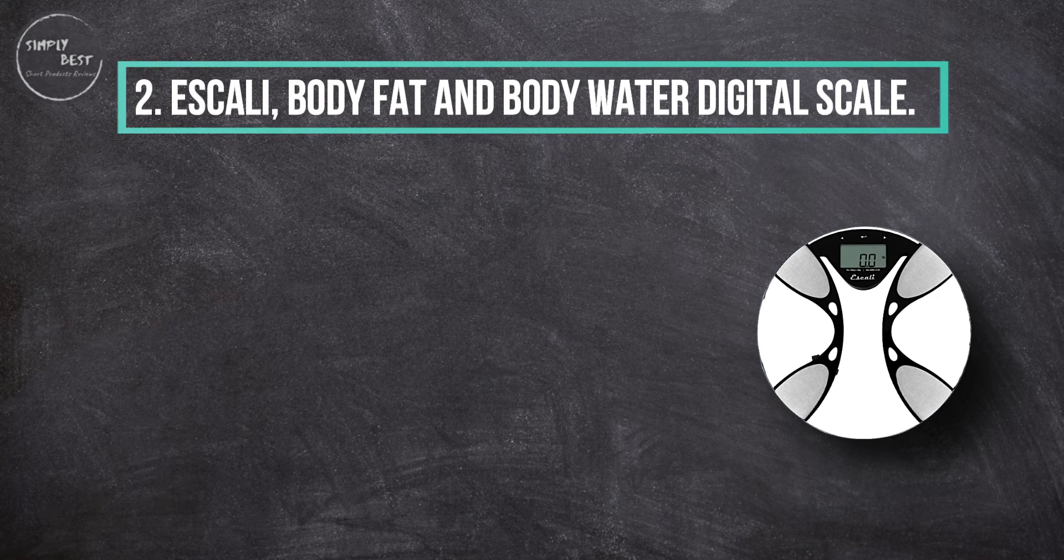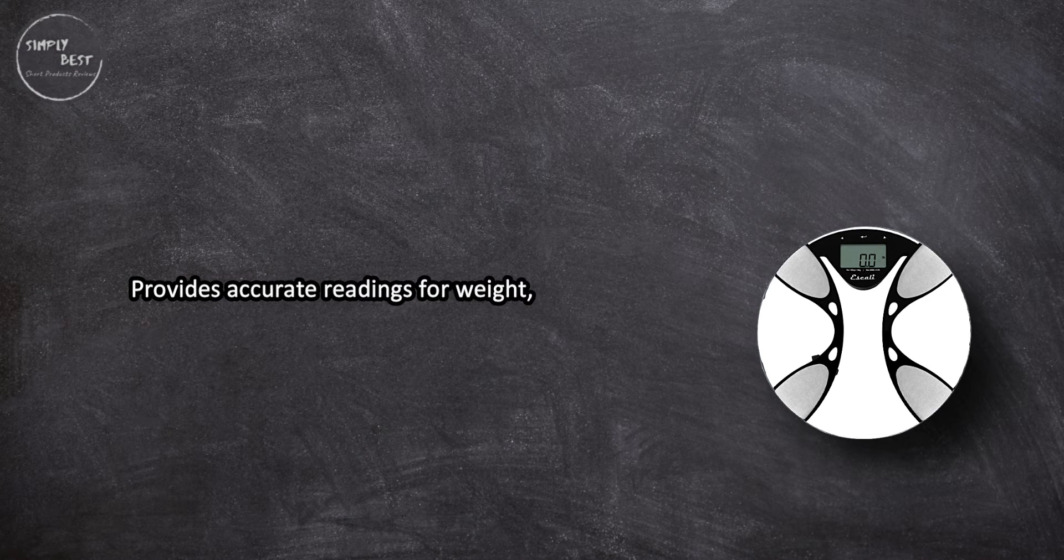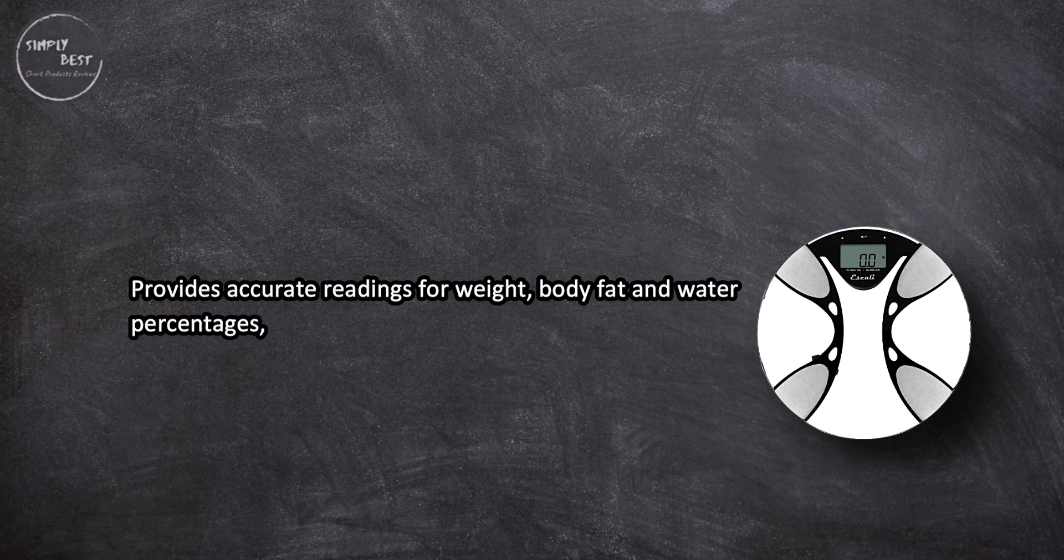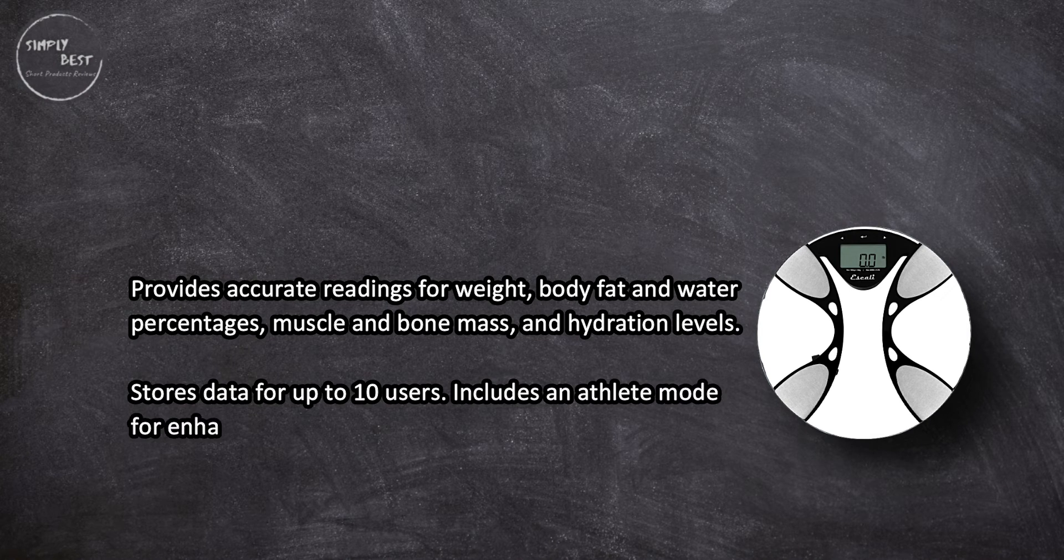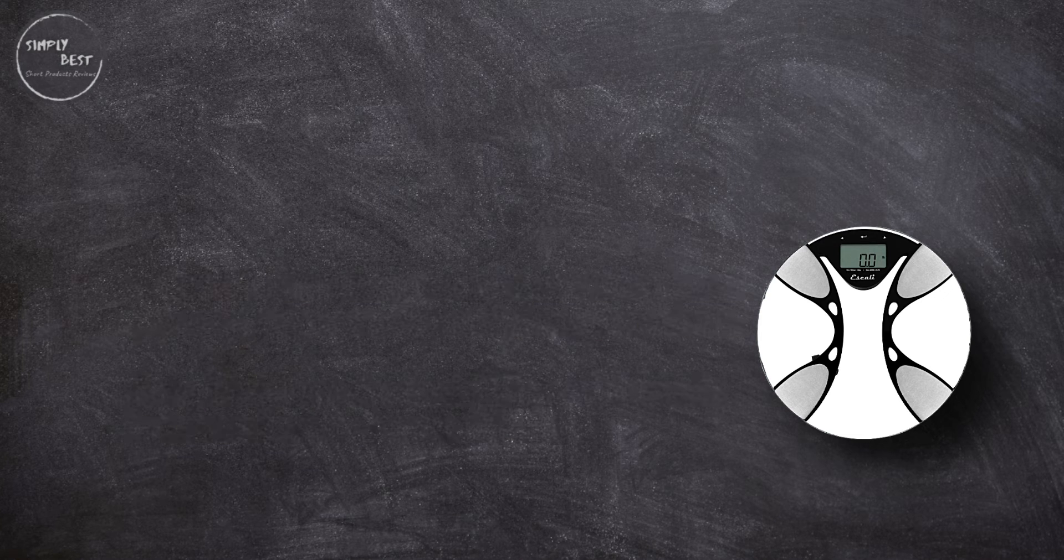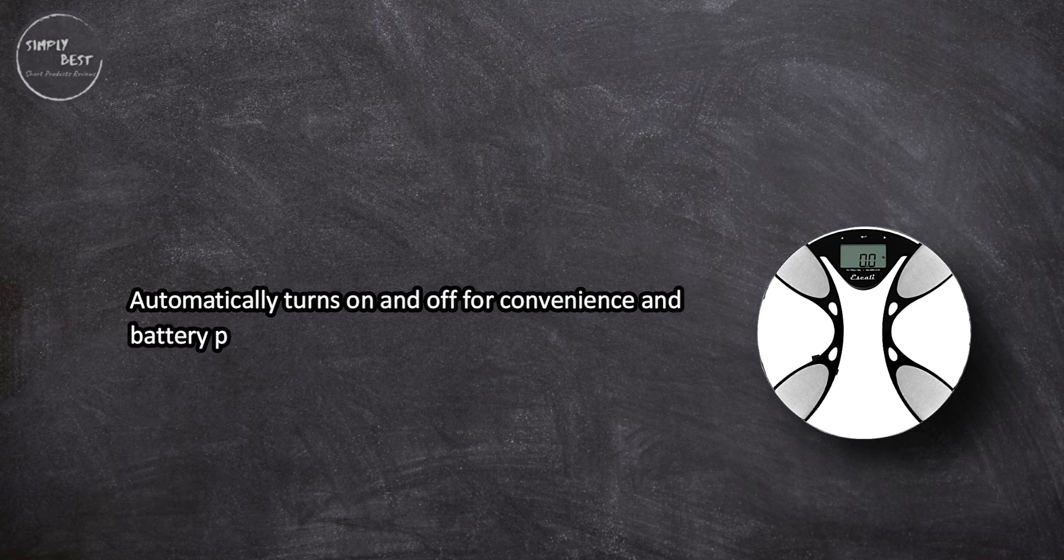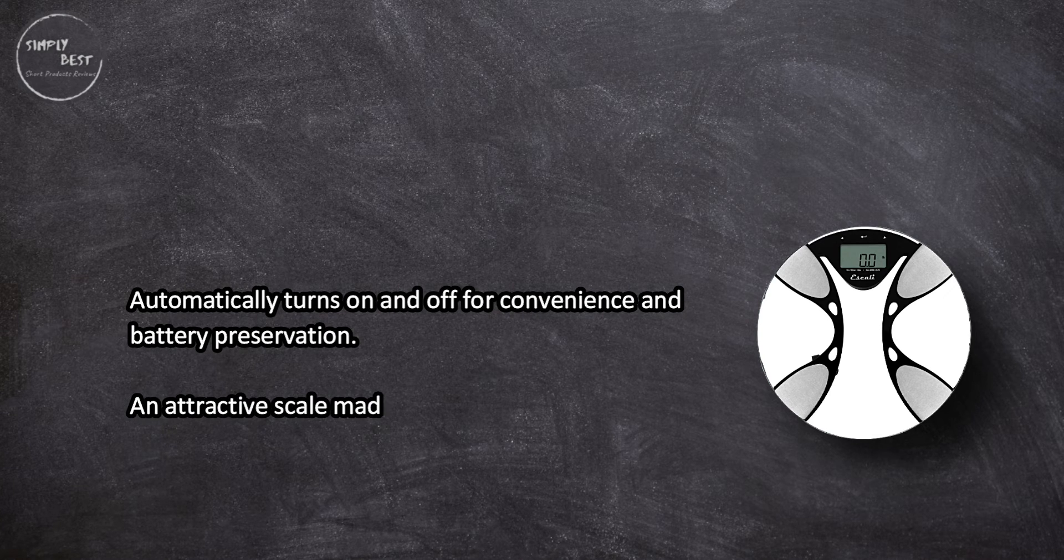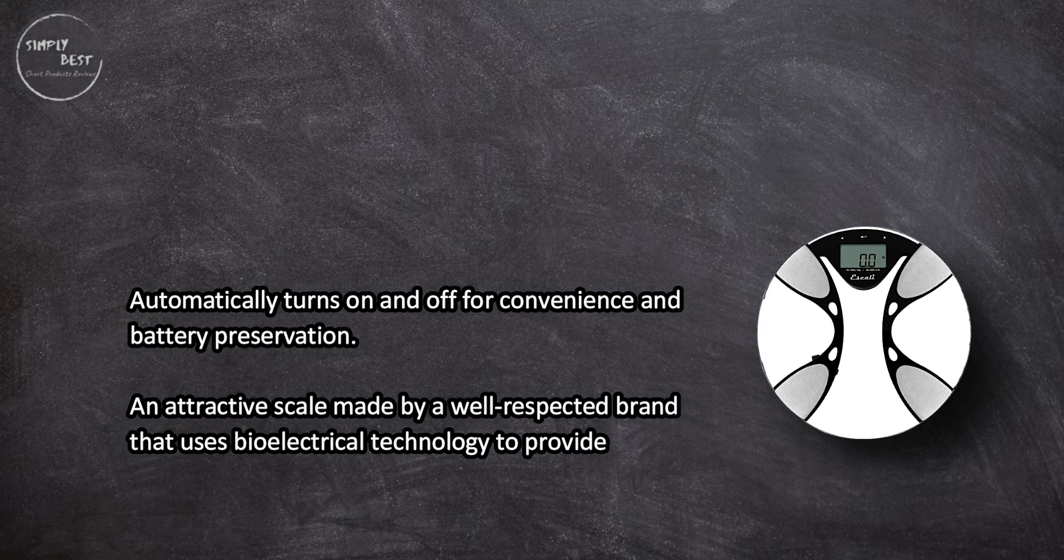Provides accurate readings for weight, body fat and water percentages, muscle and bone mass, and hydration levels. Stores data for up to ten users. Includes an athlete mode for enhanced accuracy based on lifestyle. Automatically turns on and off for convenience and battery preservation. An attractive scale made by a well-respected brand that uses bioelectrical technology.